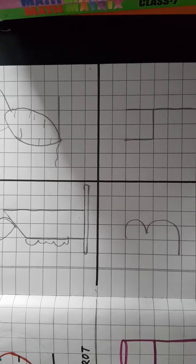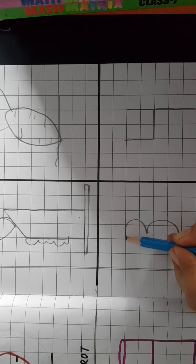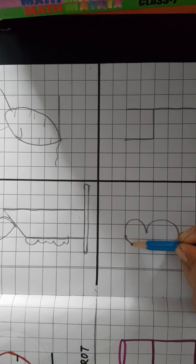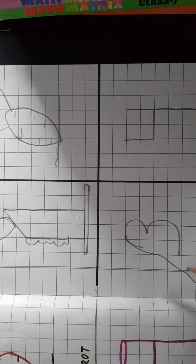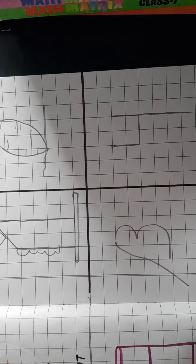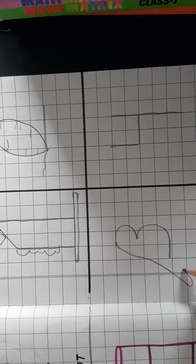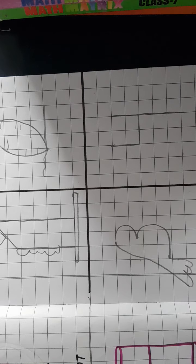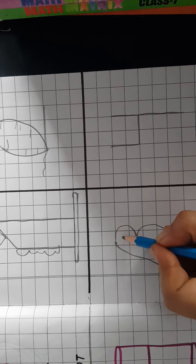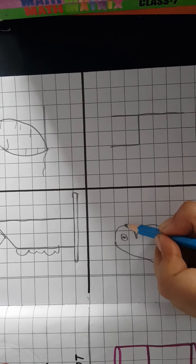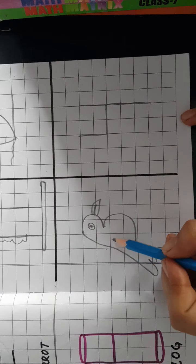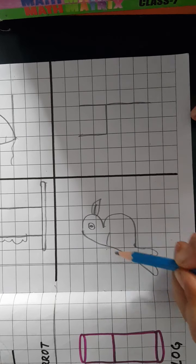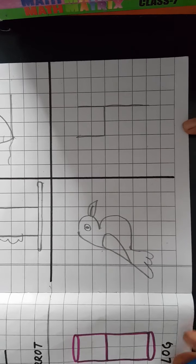Now number 3, we will draw a bird. First we will draw like this. After this, we need to create a tail which we will attach here. There will be the eye here, and here will be our beak. Now we can draw a wing here.